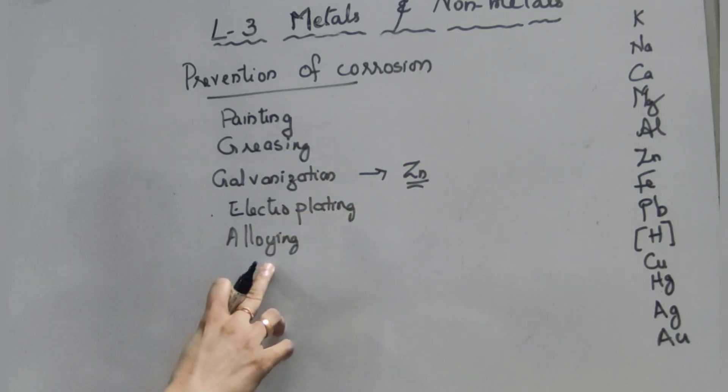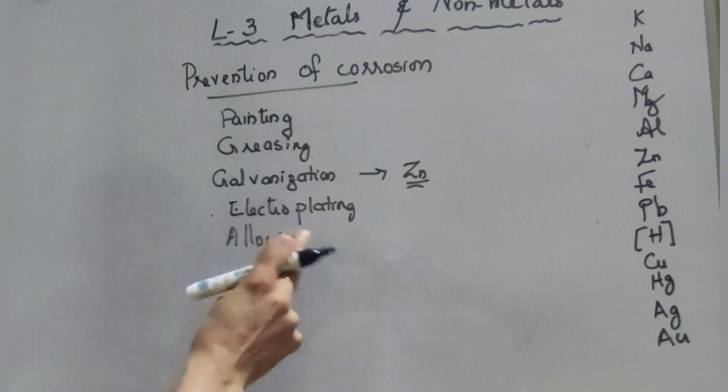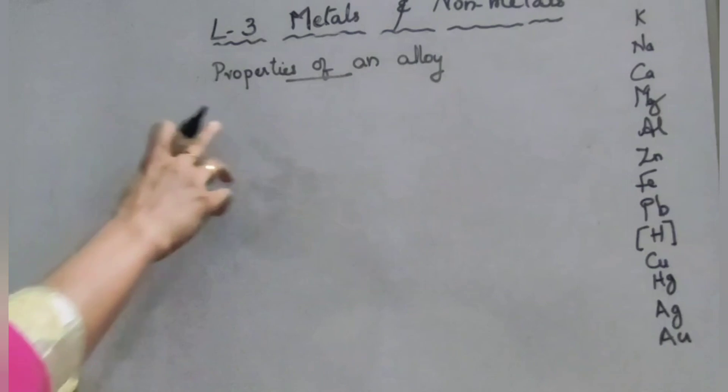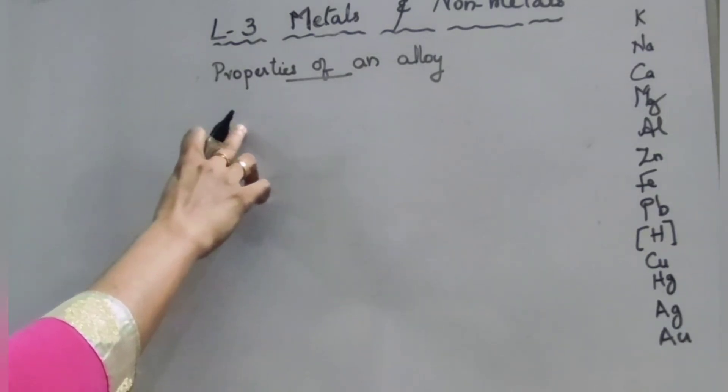Next, alloys. The alloy means the homogeneous mixture of two or more metals, or a metal and a non-metal, is called alloy. Properties of alloys: first property, alloys are stronger than the metal from which they are obtained.